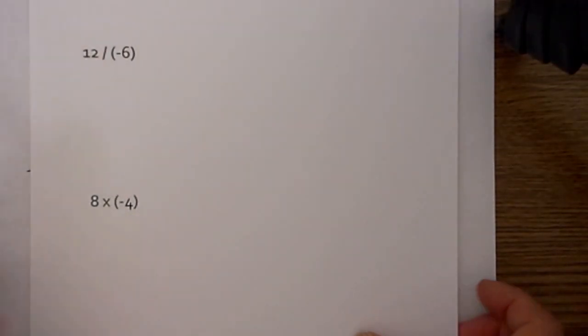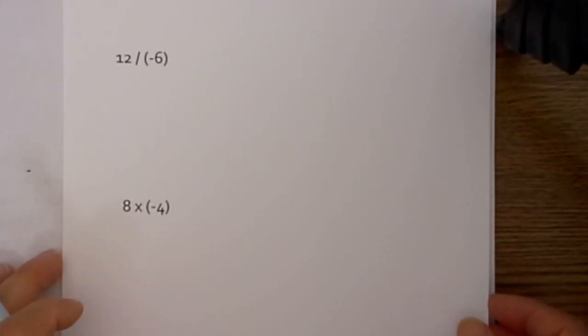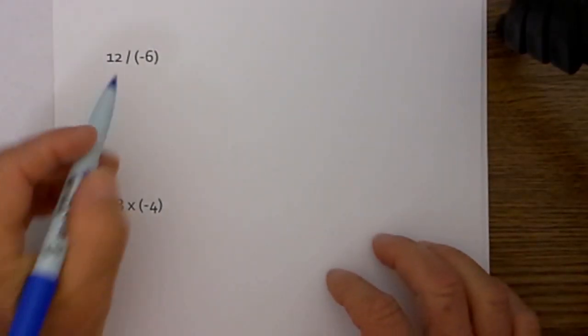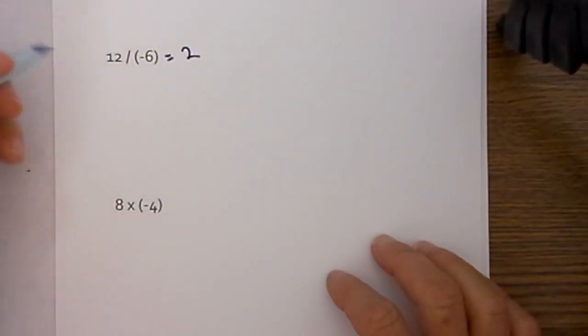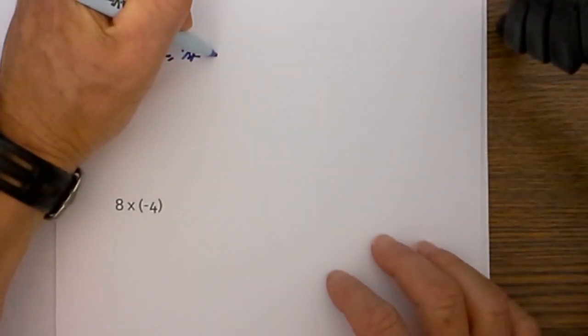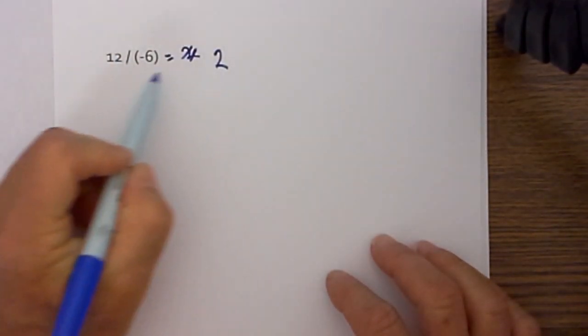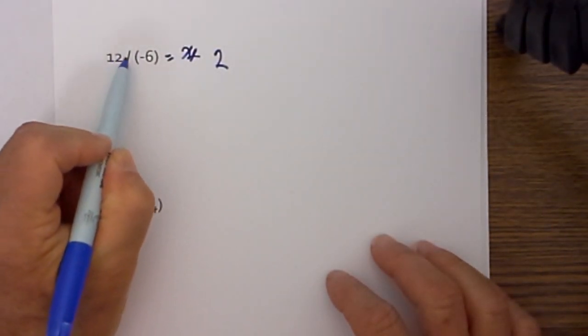Let's work a couple more examples. We have 12 divided by 6 is equal to 2. And then since we have a positive and a negative, the answer will be negative.